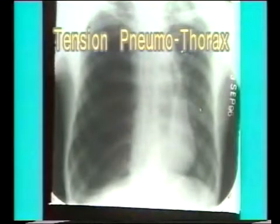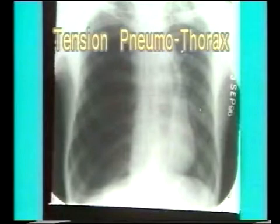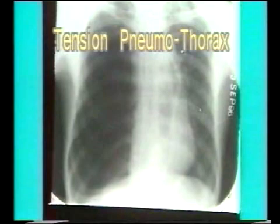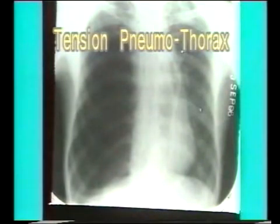This is another X-ray of tension pneumothorax. Note the complete radiolucency of the right hemithorax with shift of mediastinum to the opposite side. The diaphragm is pushed down to a level lower than the left diaphragm and intercostal spaces are widened.